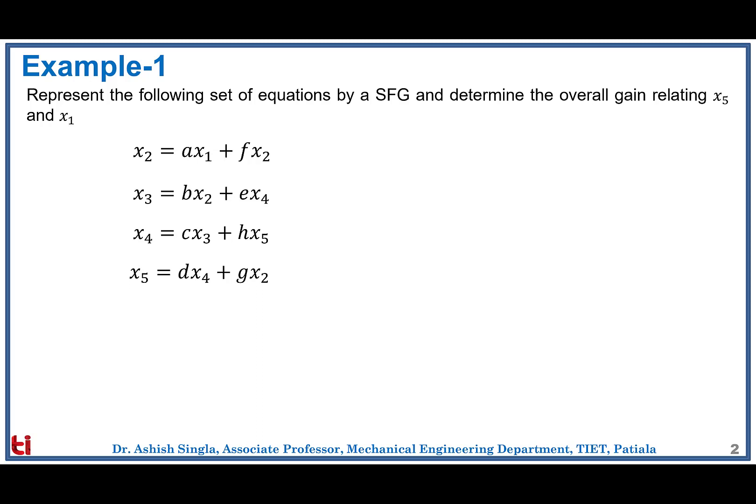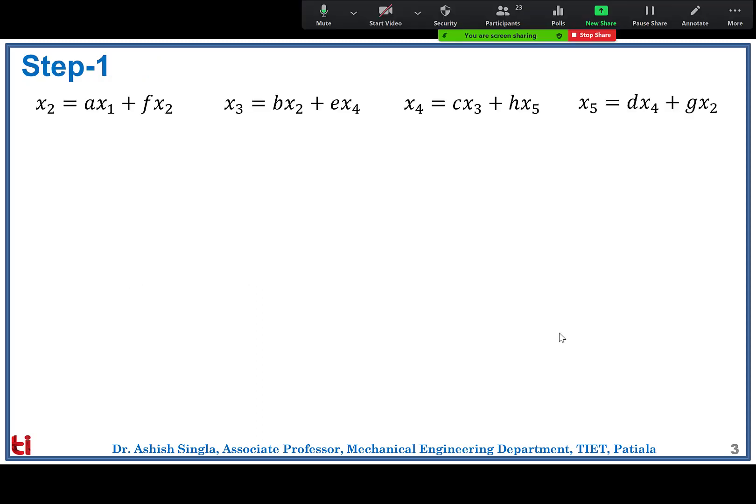We have four equations given. Step one is to write all the nodes. We are going from x1 up to x5, so we have to draw that many nodes: x1, x2, x3, x4, x5, and then draw the signal flow graph using these nodal equations. The question can be posed both ways — the signal flow graph is given and we write nodal equations, or, as in this reverse question, nodal equations are given and we draw the signal flow graph.